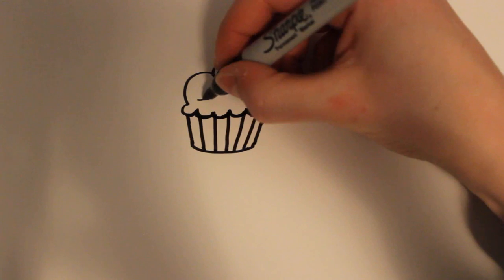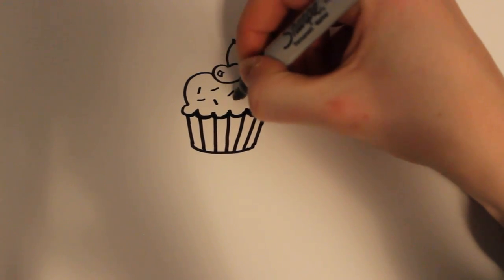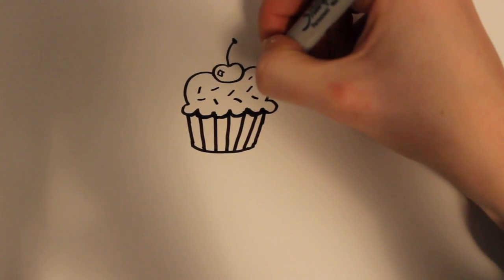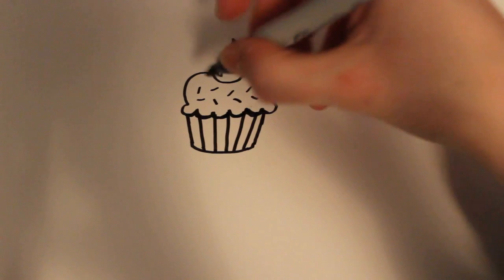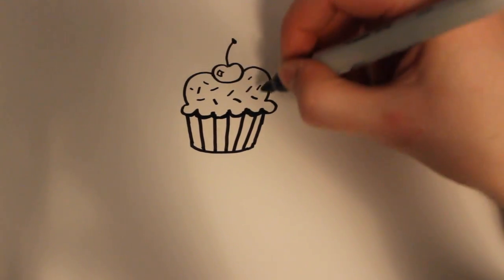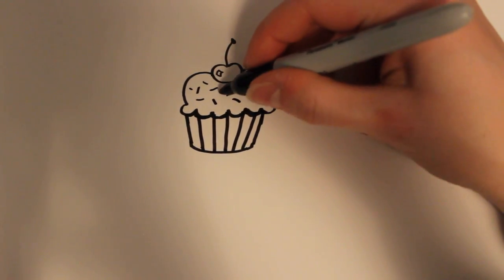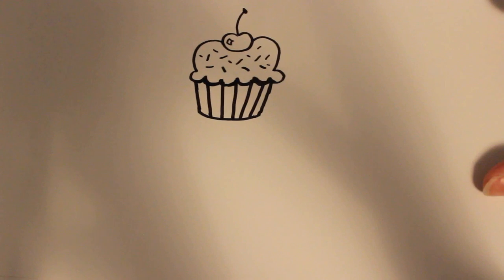And then for the last and final detail, I'm going to add a few sprinkles here and there going kind of back and forth wherever you want, but not really taking up all of the room. And if you have different colors, if you're coloring this in, this will look really cool to have a bunch of different colors.